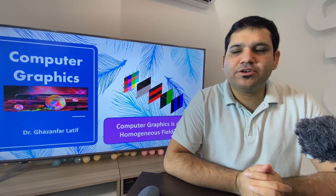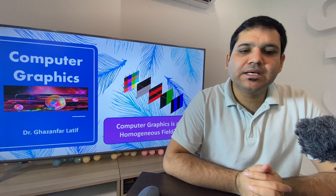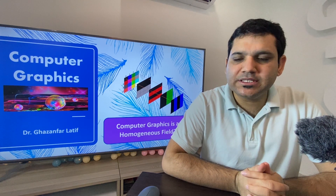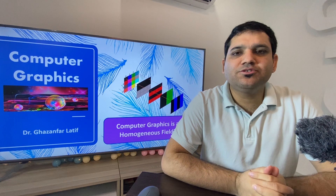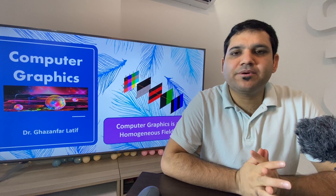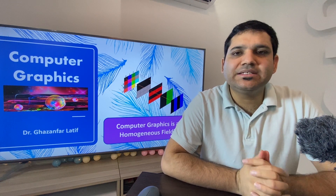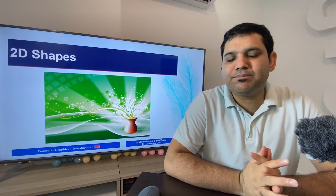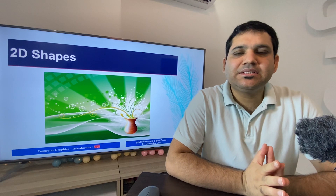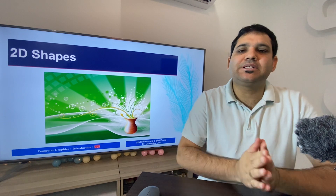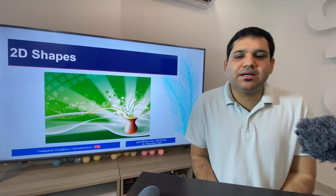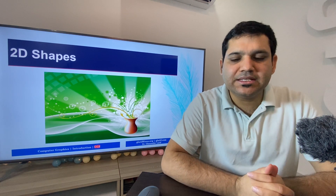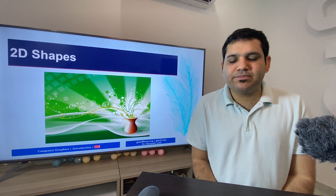Welcome to another video on the computer graphics lecture series. In this video we are going to discuss that computer graphics is a homogeneous field, because in computer graphics we use similar objects with different properties to make and generate graphics. In computer graphics we make 2D shapes by combining and merging similar objects with different properties such as lighting effects, materials, and texture mapping.